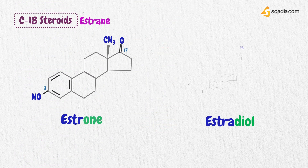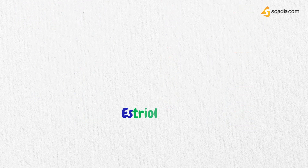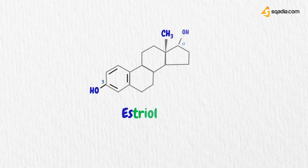Another estrogen is estradiol. Here you can again observe the OH group at position 3, but at position 17 we have another alcohol group instead of a ketone group. That's why it is named estradiol, which means it has two hydroxyl groups attached. Another estrogen is estriol. Here the OH group is present at position 3 as well as position 17. Apart from that, there is an extra OH group at position 16, which is attached by alpha linkage. That's why it is named estriol, which means three hydroxyl groups attached.